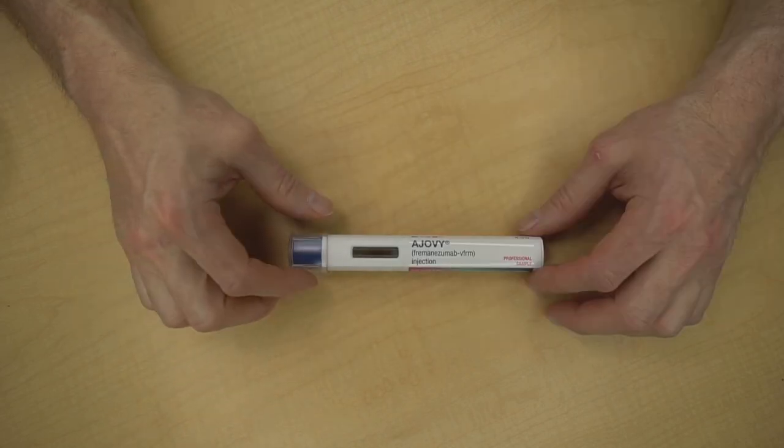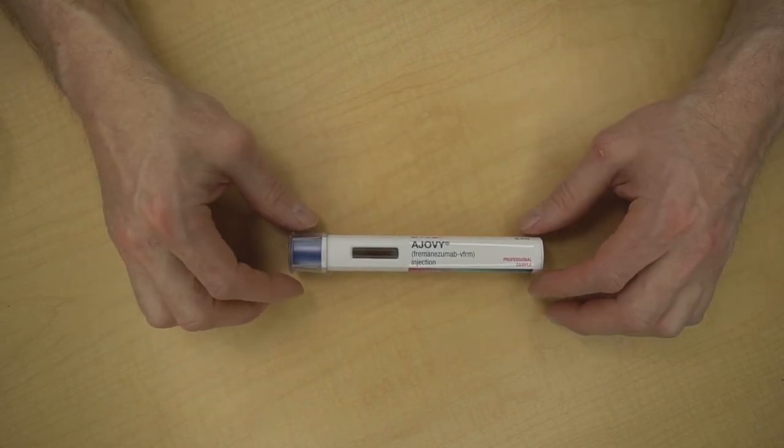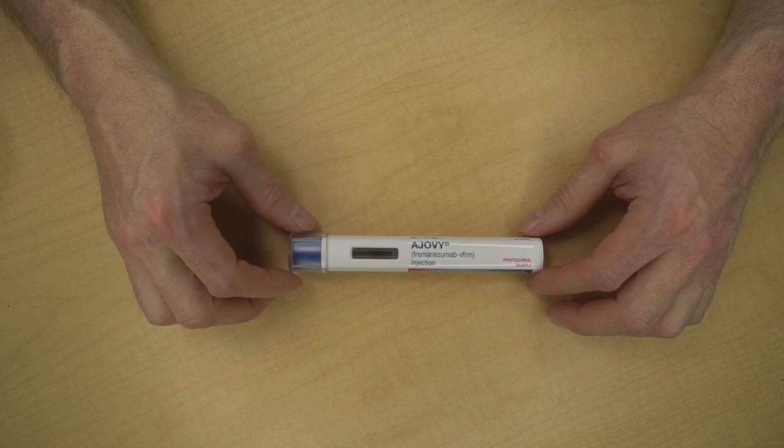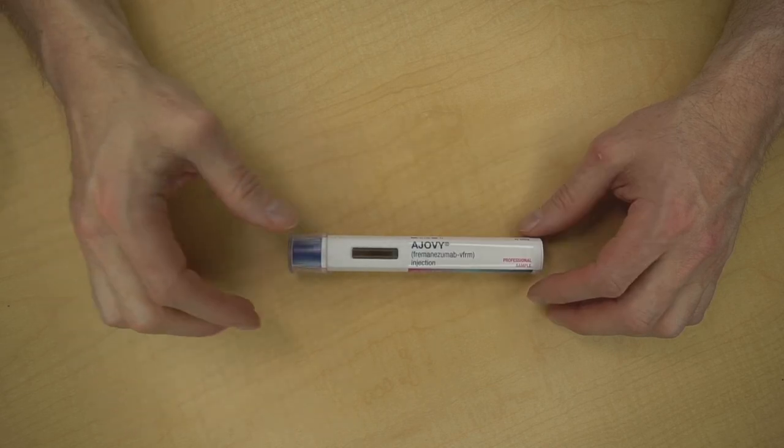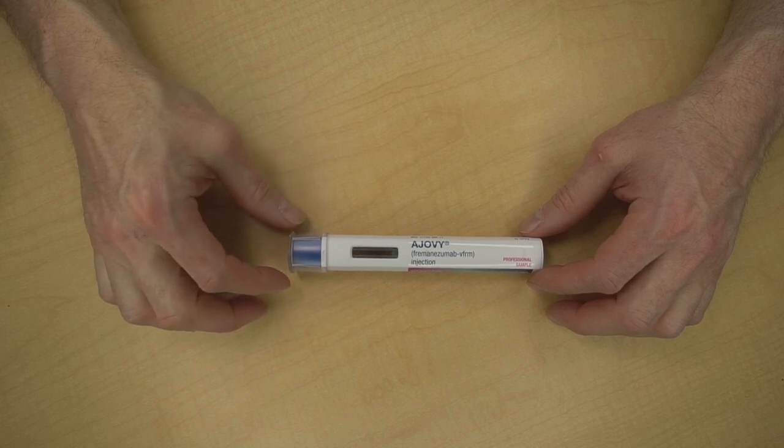The second step is to choose your injection site. For Ajovi, the injection sites are the tummy at least a couple of inches away from the belly button, the front of either thigh away from your knee or groin, or if you have a helper, you can choose the back of your upper arm. To do the quarterly dose of three injections, you can use the same body area, but don't do the injections in exactly the same spot.